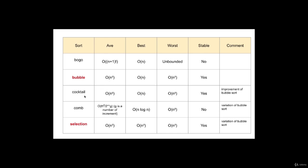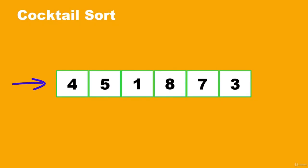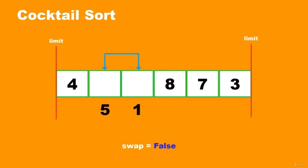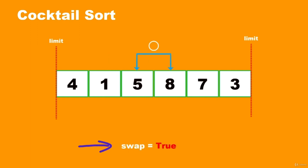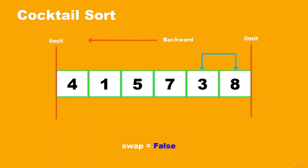In this lecture, we're going to cover cocktail sort, also referred to as the cocktail shaker sort. It's an improvement of bubble sort and very similar to it. Think of bubble sort as an old-fashioned sort. Our example list is [4, 5, 1, 8, 7, 3]. Just like bubble sort, we look at the list from the beginning. We have a swap flag — swap equals False — which becomes True when we actually swap two numbers. We compare 4 and 5 (fine), then 5 and 1 (swap, so swap becomes True), then 5 and 8 (fine), then 8 and 7 (swap), then 8 and 3 (swap).